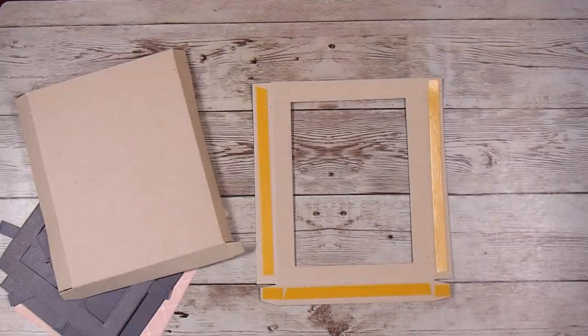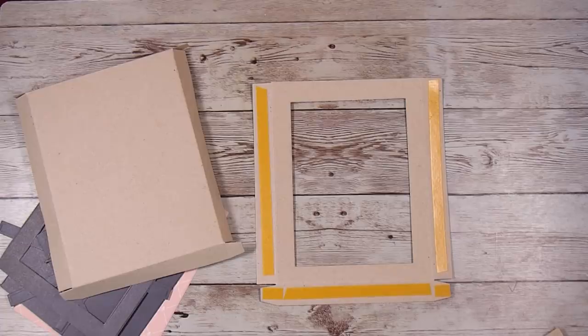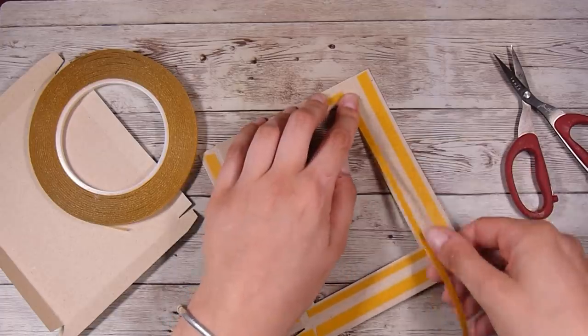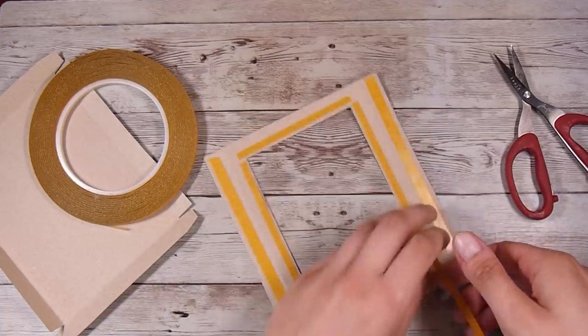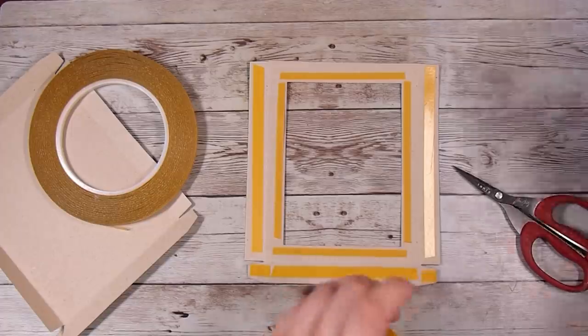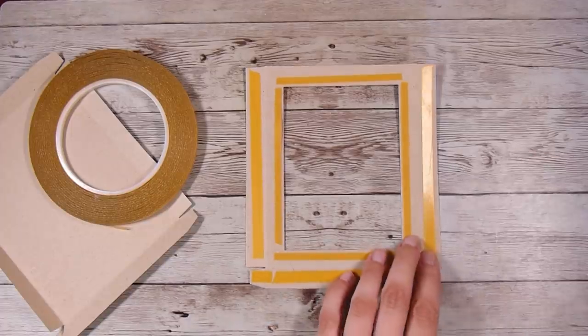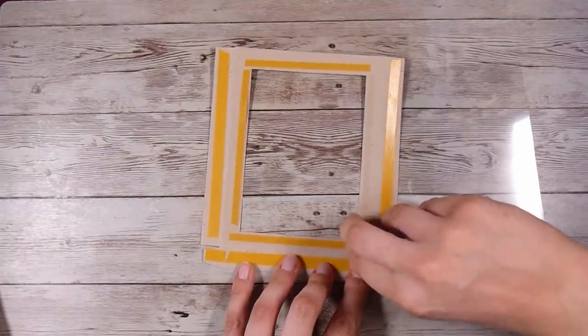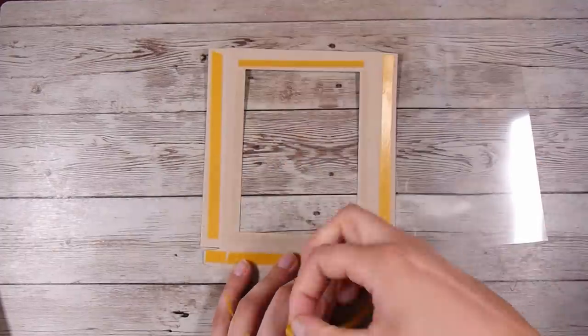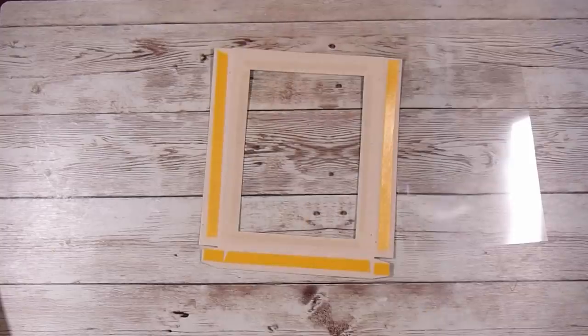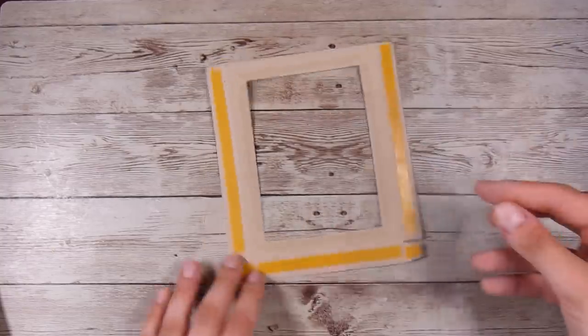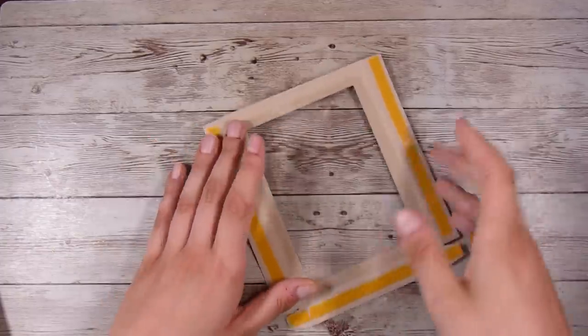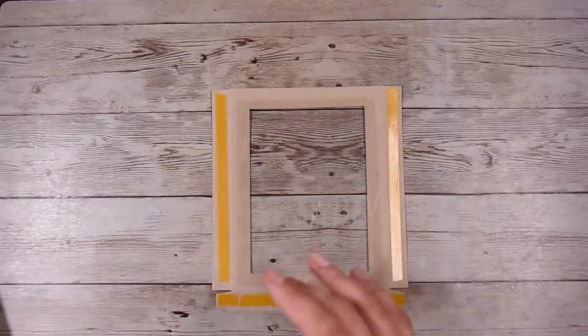The next thing that I need to do for my window is add a piece of acetate. Again, you could maybe leave the window open or you could add some vellum, which wouldn't make it quite as see-through, all options to explore. But I'm going to add some double-sided tape down, then take that off and I have cut a piece of acetate that is just slightly bigger than my rectangle that I made for the window. Pop it down and then I'm going to add another layer of double-sided tape on top of it so I can adhere down the frame that we cut earlier on.